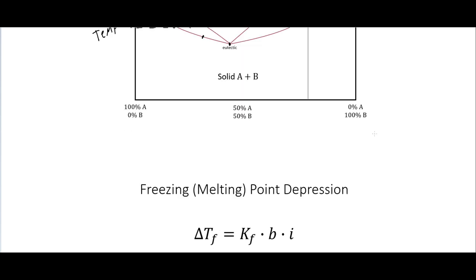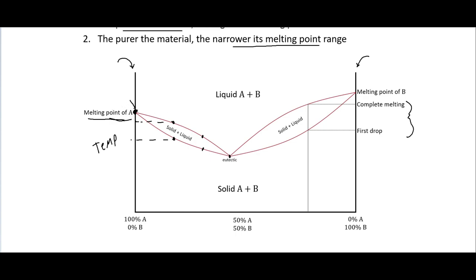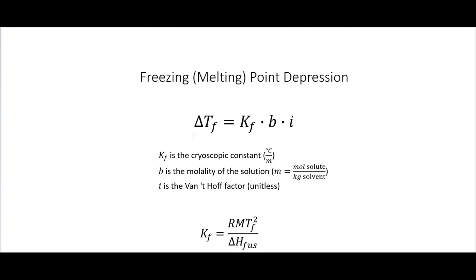We can look at the freezing or melting point depression. When we have pure A, the melting point is at a certain temperature; the depression means the temperature at which it melts or freezes goes down. We use the formula ΔT = KF × b × i. ΔT is the change in freezing point, KF is the cryoscopic constant with units of °C/molality, b is the molality of the solution, and i is the van't Hoff factor, which is unitless.